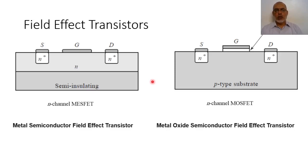Welcome everyone. In the previous two videos we were discussing the bipolar junction transistor and the hetero junction bipolar transistor as examples of microwave transistors. Now we are going to discuss the other type of microwave transistors, which is the field effect transistors. In microwave we have three main types of field effect transistors.